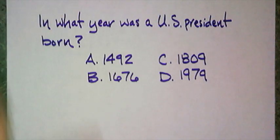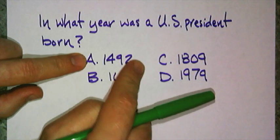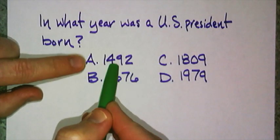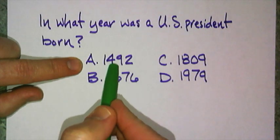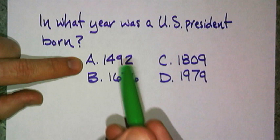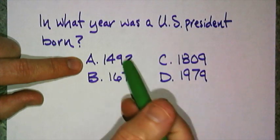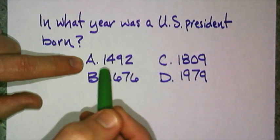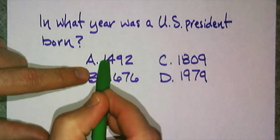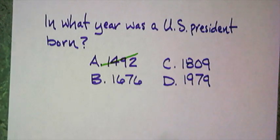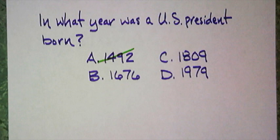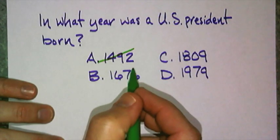We're going to do this indirectly. Assume that A is true. If 1492 is the correct answer, then the U.S. president was born before the nation was founded in 1776 — that's not going to work. 1492: Columbus, ocean blue, yada yada. And 1676 — once again, the nation's not around. George Washington was our first president, and he wasn't 100 years old. So that one's out.